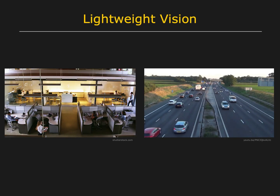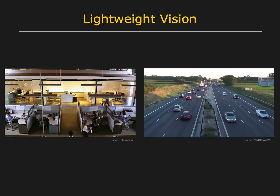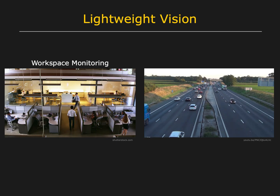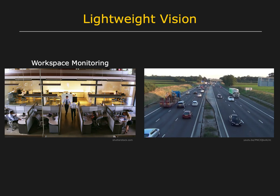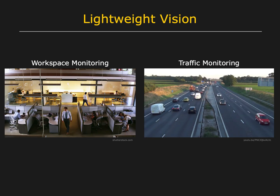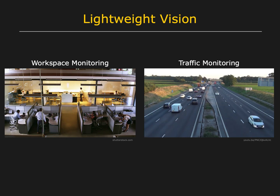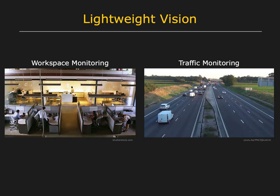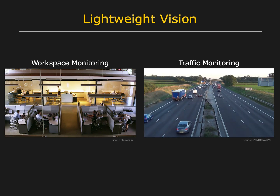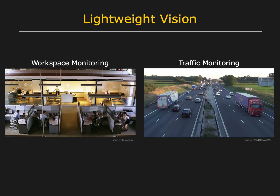There is a large category of vision tasks that do not involve the detection of fine-grained details in a scene. Examples include monitoring a workspace to estimate its occupancy and the estimation of the flow of traffic on a highway. In these tasks, the goal is to make high-level inferences about the scene, such as counting the number of people or estimating the aggregate motion of objects. In such cases, we show that these tasks can be solved with a very small number of visual measurements.